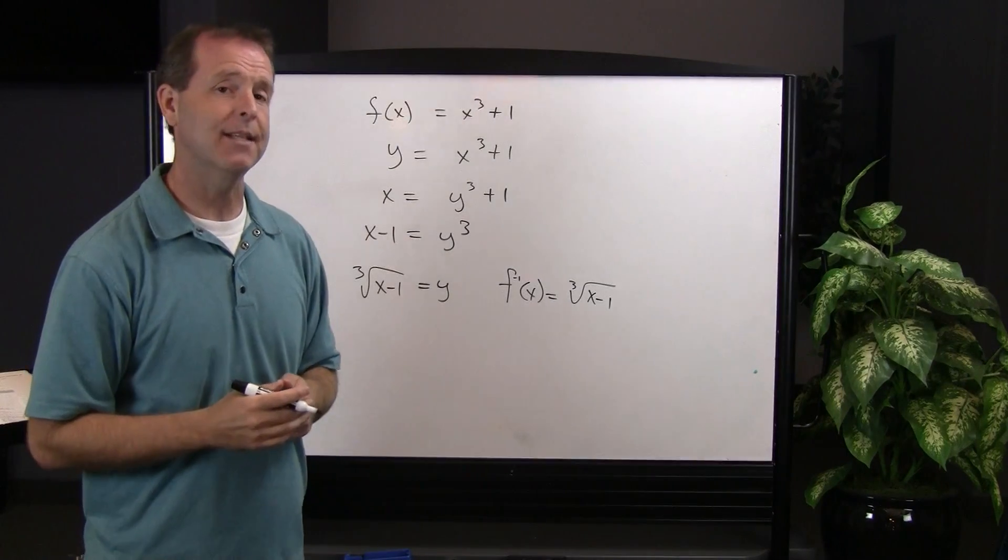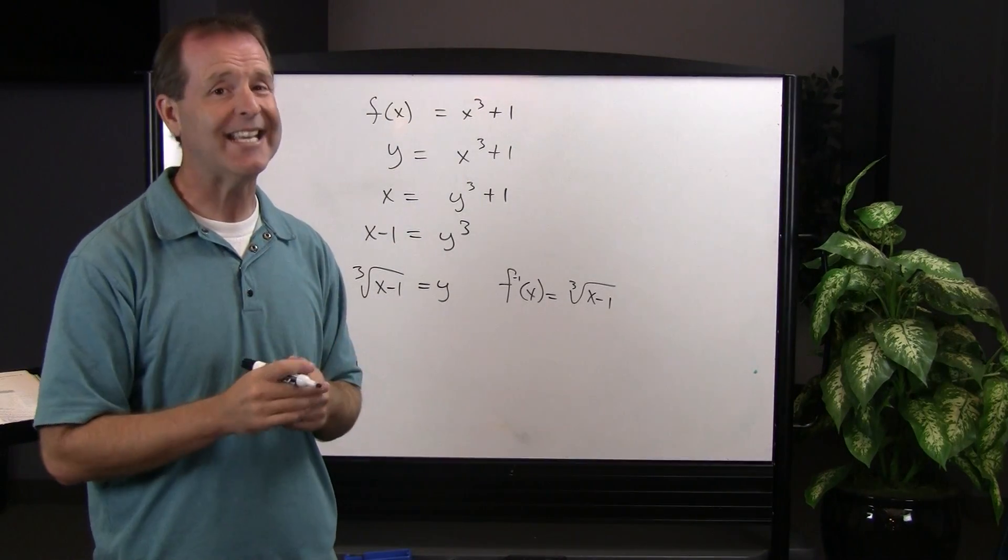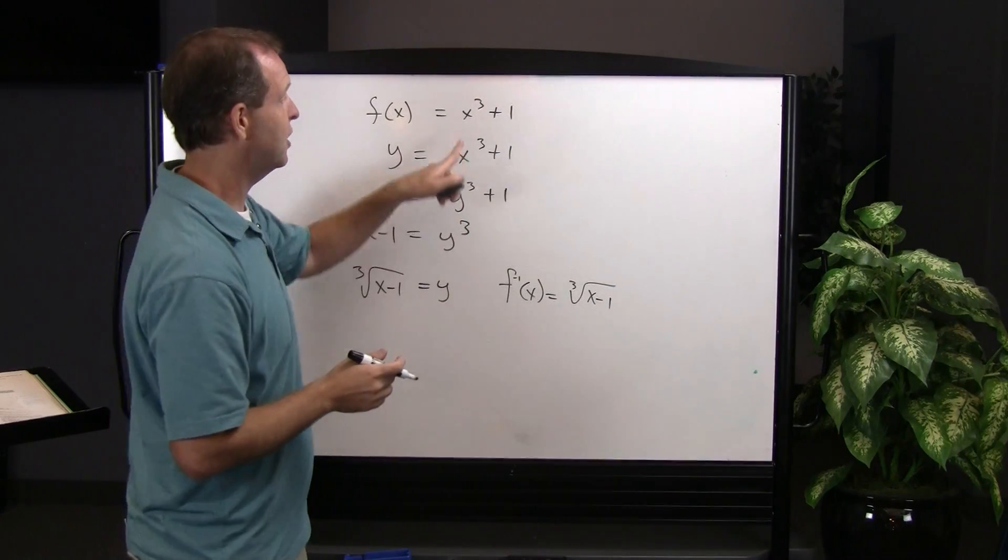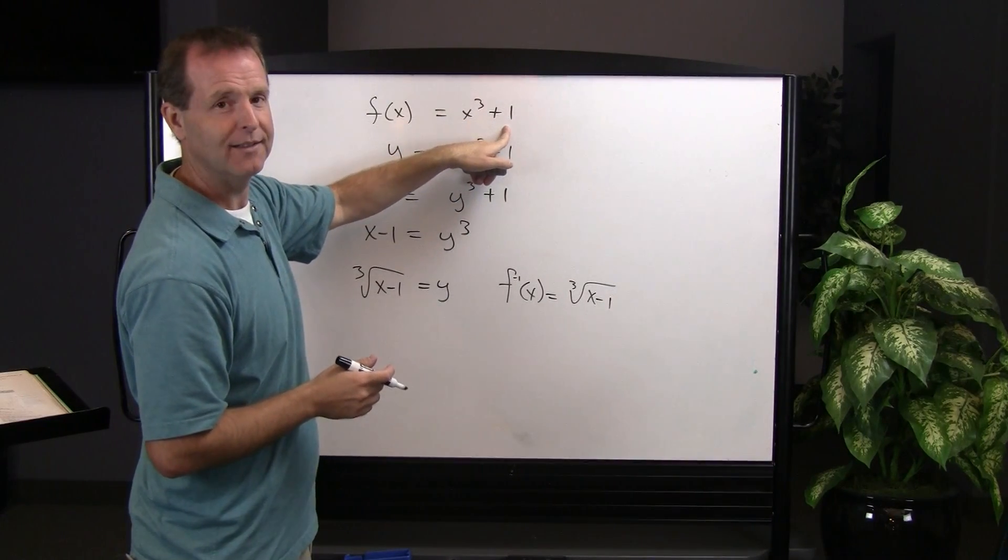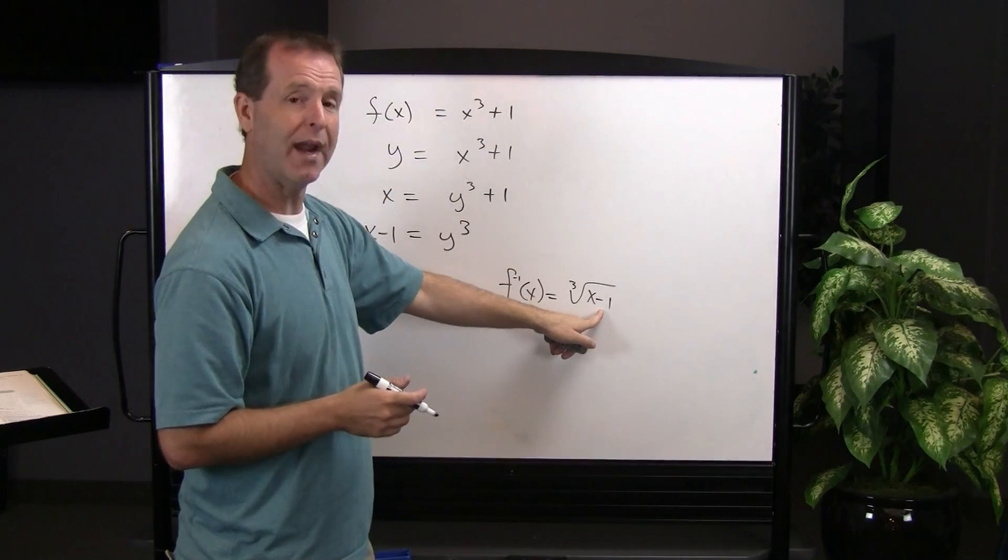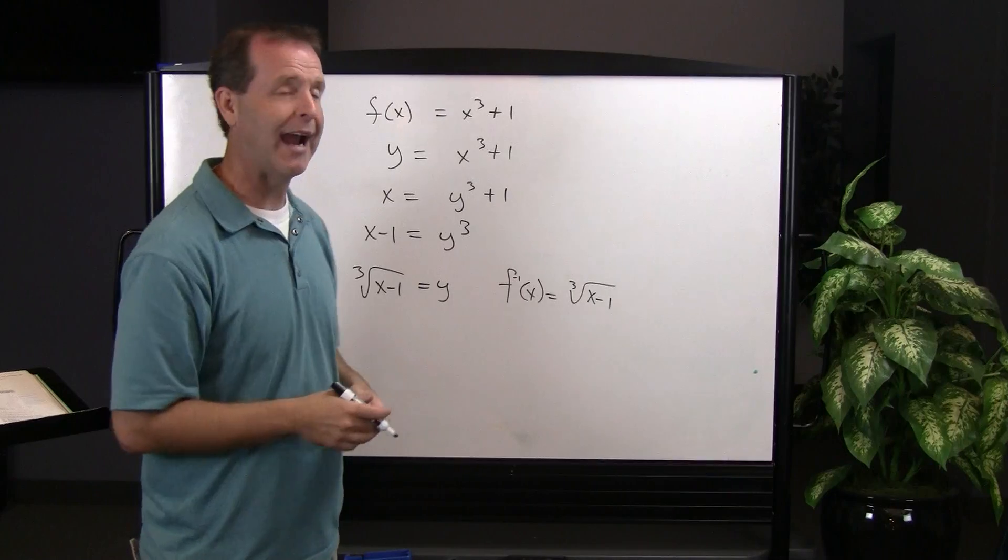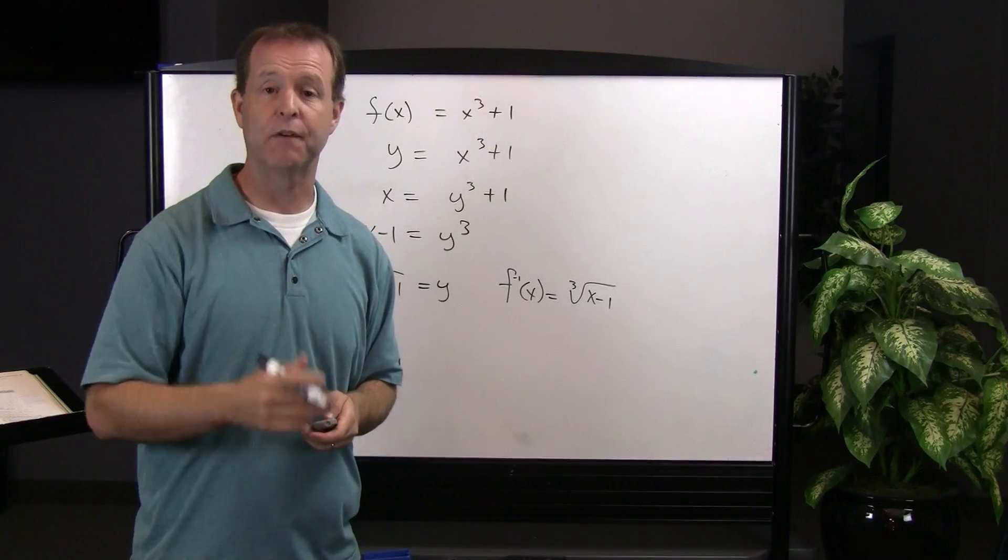And I hope that you can see the similarities of why that is the inverse function of the original one. Because again, the original function cubed the x, then added the 1. Now we need to find something that takes away a 1, then takes the cube root of that. And that's what we have, and therefore we found the inverse function.